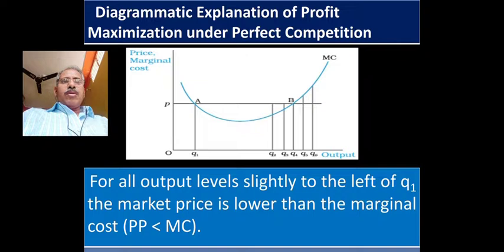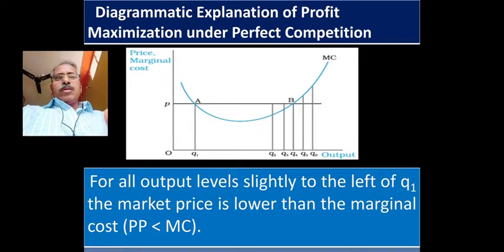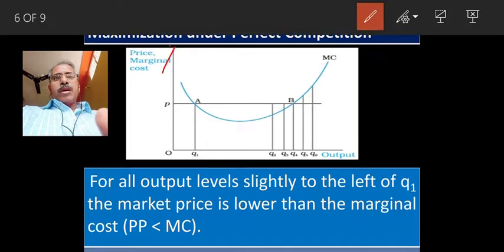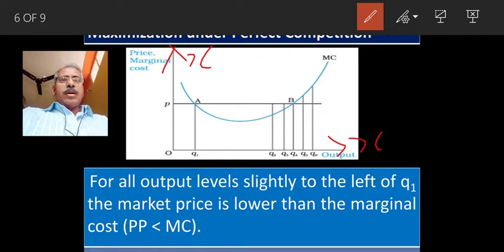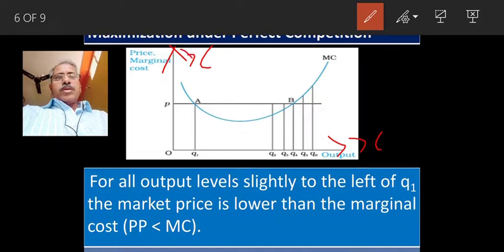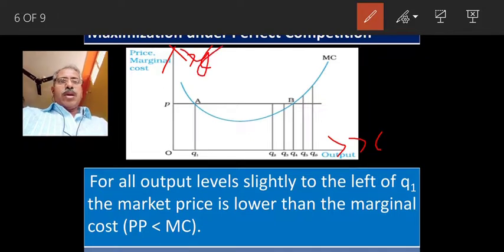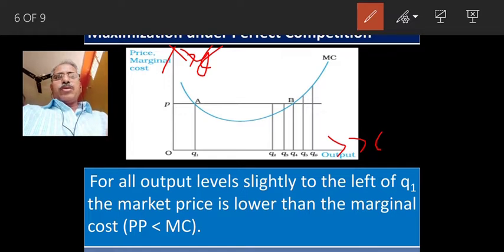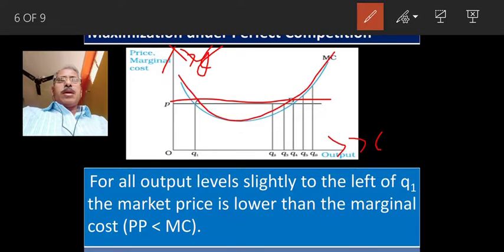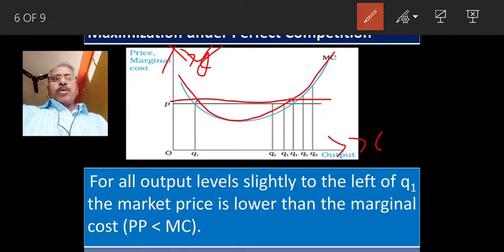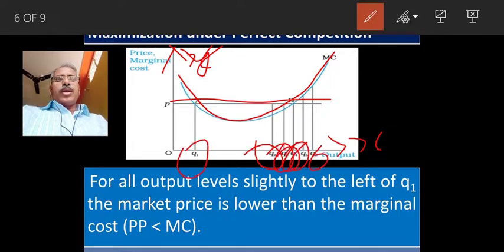Diagrammatically, we can explain how profit maximization can have by a firm under perfect competition. In the diagram, on the X-axis we have output quantity: Q1, Q2, Q3, Q4, Q5, Q6. MC is the marginal cost curve.